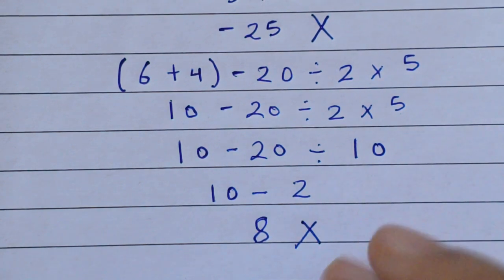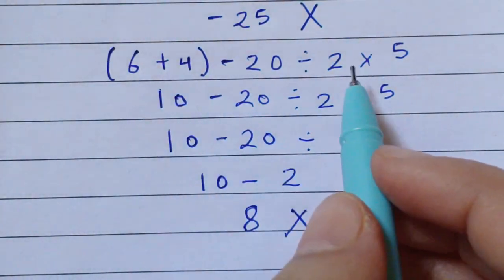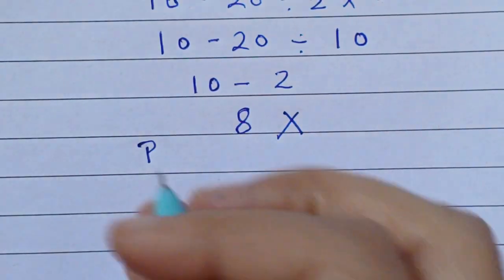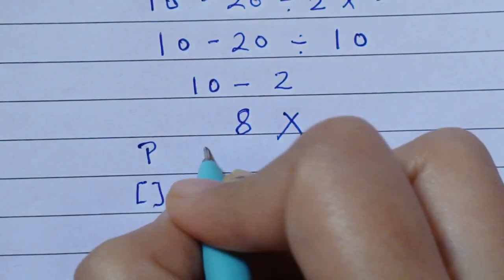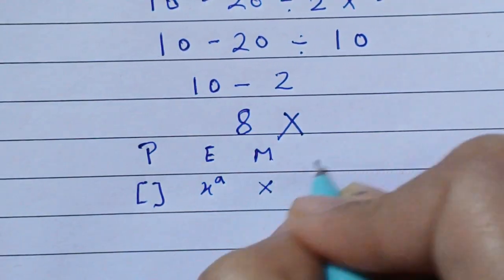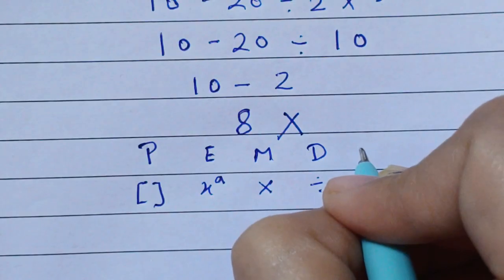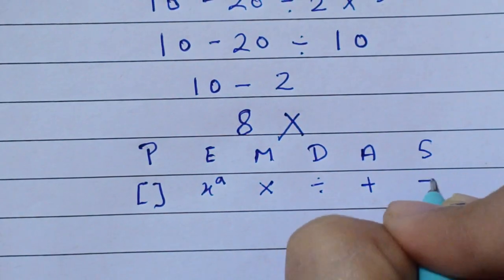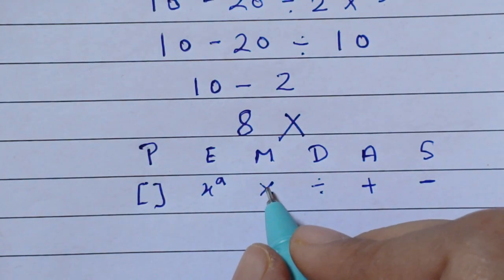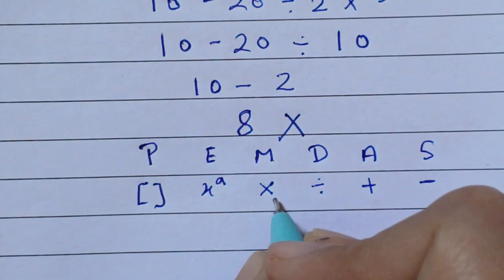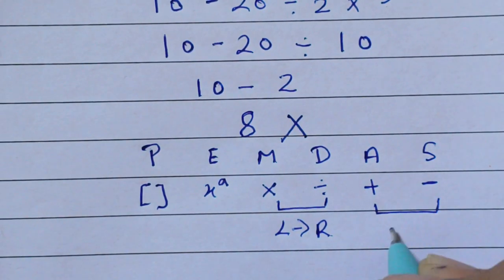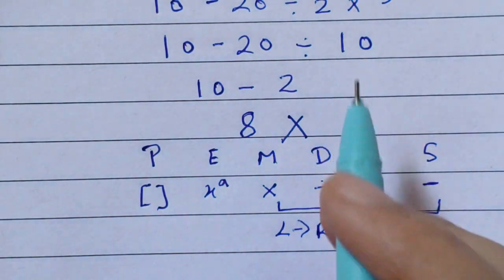So what is the correct value? According to the BODMAS rule: P stands for parentheses, E stands for exponents, M stands for multiplication, D stands for division, A stands for addition, and S stands for subtraction. This is the priority order for solving the expression. Remember, multiplication and division have equal priority, so we go left to right — same for addition and subtraction.